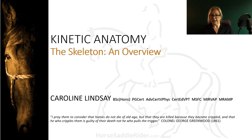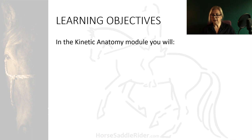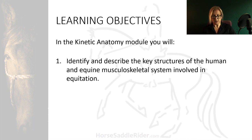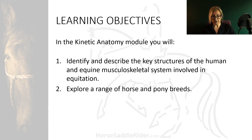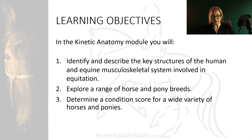In this module we will look at kinetic anatomy of horse and rider in relation to equitation. You will identify and describe the key structures of the human and equine musculoskeletal system involved in equitation, explore a range of horse and pony breeds, and determine a condition score for a wide variety of horses and ponies.